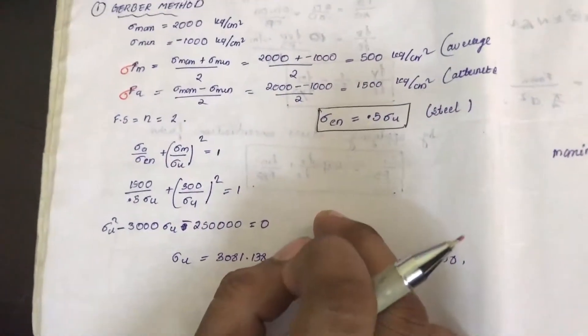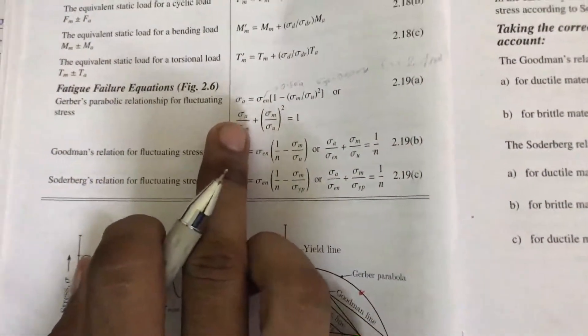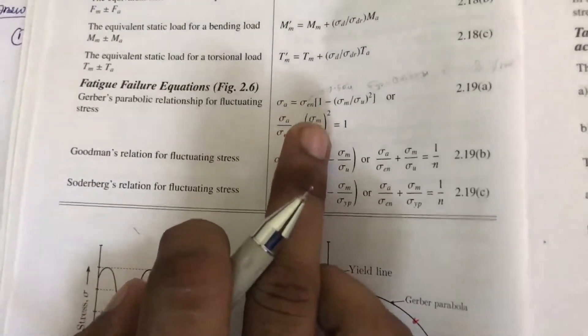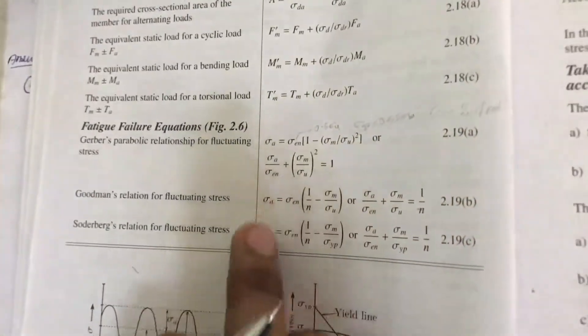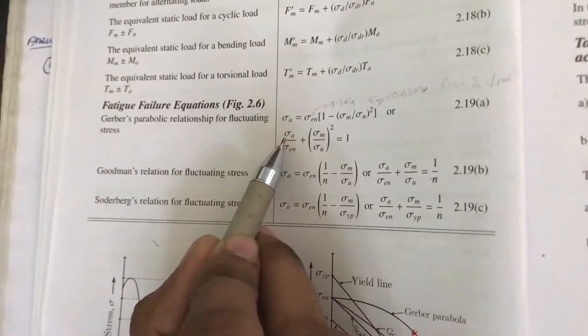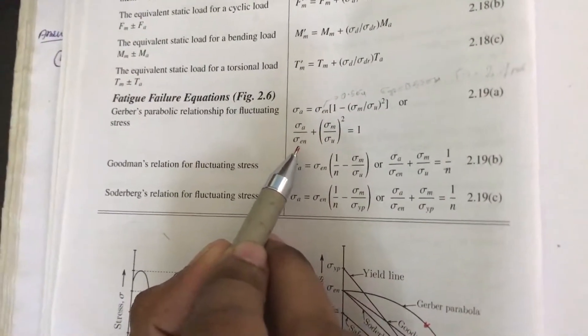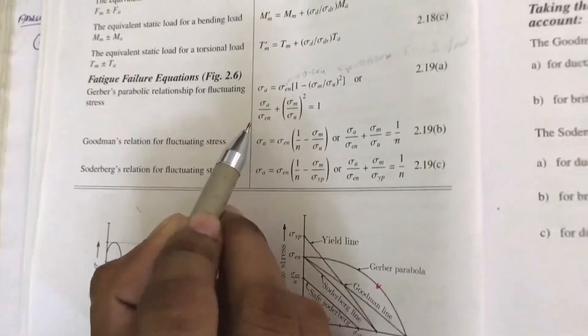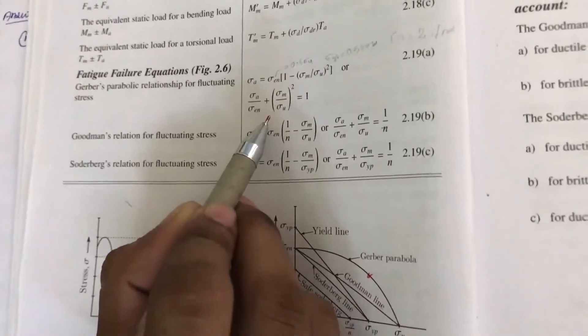Now first we will be using, we have three methods. First one is Gerber method, where we have the formula sigma a by sigma en plus sigma m by sigma u whole square equal to 1. That is equation 2.19a. Here sigma a we have found, sigma m we have found. Sigma en is 0.5 sigma u. Again sigma u is unknown, but we want to find this sigma u.